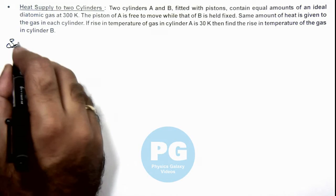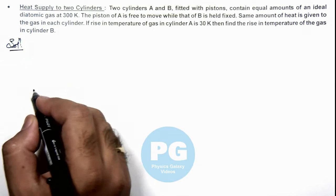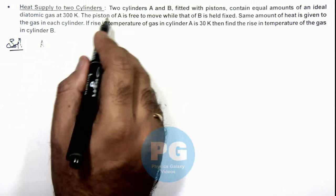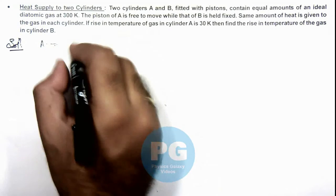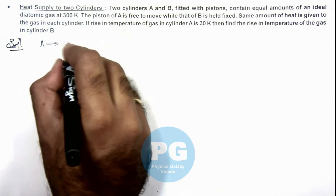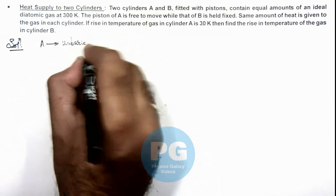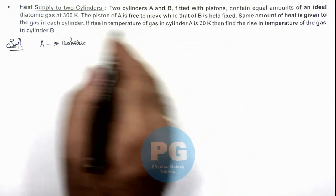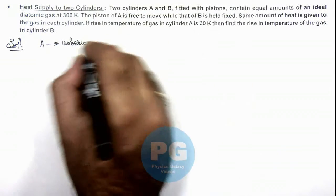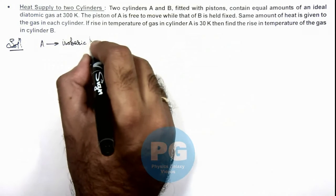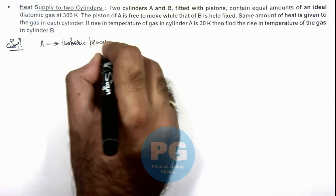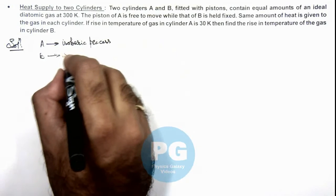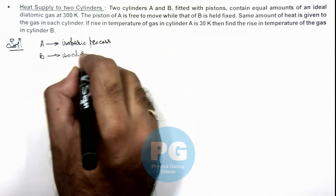Now, if we solve the situation we can see in cylinder A as the piston is free to move, the process will be isobaric because it is open to atmosphere and the piston is free to move. So in cylinder A it'll be an isobaric process. And in cylinder B as the piston is held fixed, this can be taken as an isochoric process.